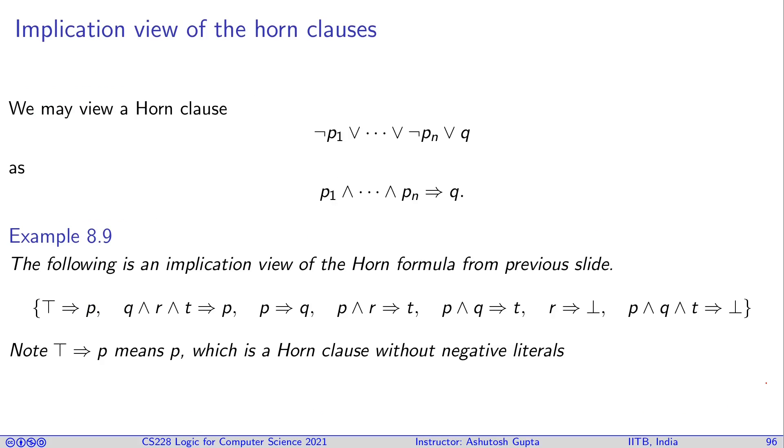There is a different view of a Horn clause. You have all negative literals and one positive. You can turn this into implication form: p₁ ∧ p₂ ∧ ... ∧ pₙ → q. If all of them are made true (i.e., all the negated literals are made false), then q has to be made true. We can translate all our clauses into this form. If there are no negative literals in your clause, you translate it to ⊤ → p. Otherwise, you have multiple literals on the left-hand side and one on the right.